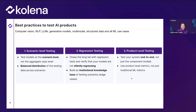The last level is product-level testing — not just testing component models individually, but testing your system end-to-end. If it's a self-driving car deciding whether to cross an intersection, many models are involved. You want to test the end-to-end result using product-level metrics, not just traditional ML metrics. A recall score might matter for a component model, but it's not necessarily informative at the product level.